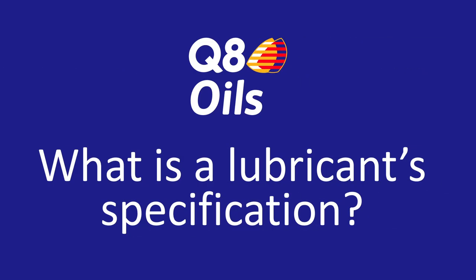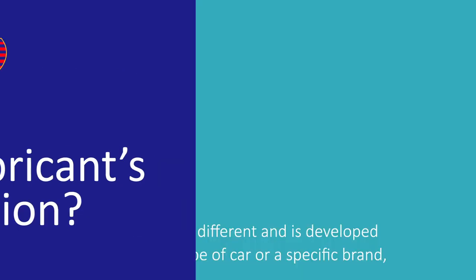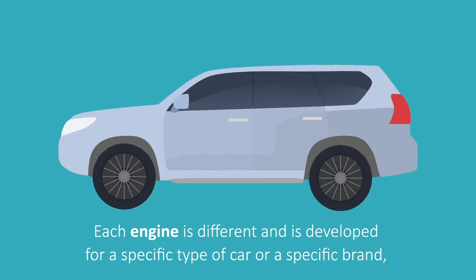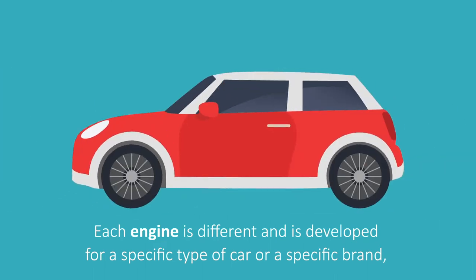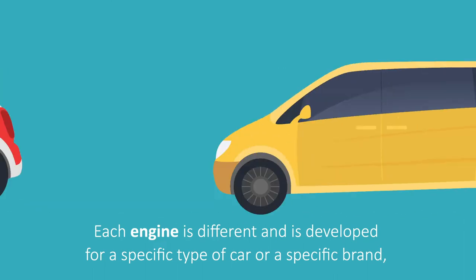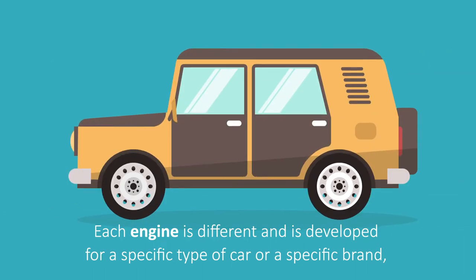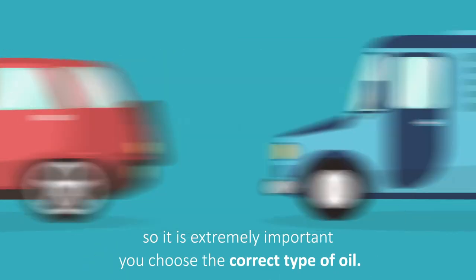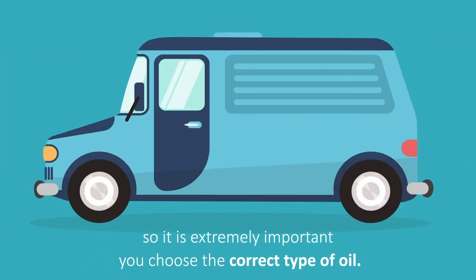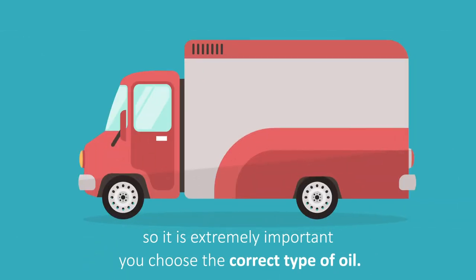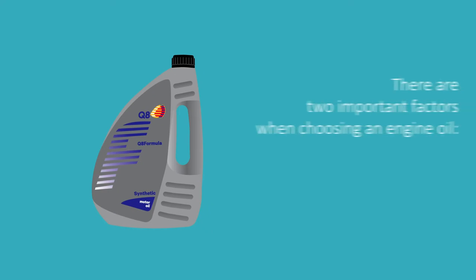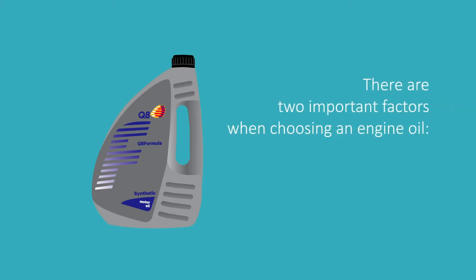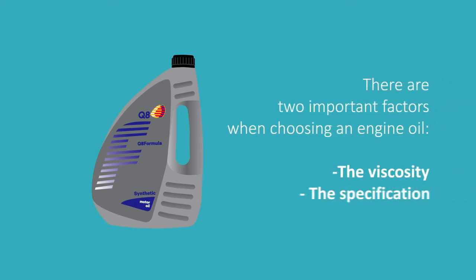What is a lubricant specification? Since each engine is different, each engine oil is developed for a specific type of car or a specific brand, so it is extremely important you choose the correct type of oil. There are two important factors to consider when choosing an engine oil: the viscosity and the specification.